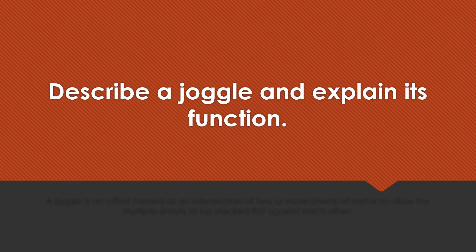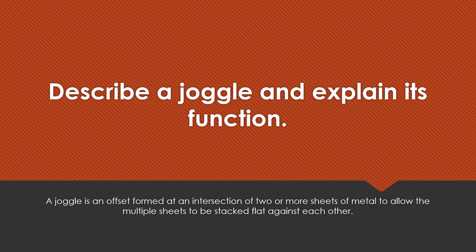Describe a jaggle and explain its function. A jaggle is an offset formed at an intersection of two or more sheets of metal to allow the multiple sheets to be stacked flat against each other.